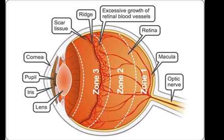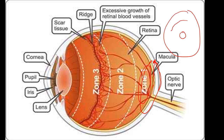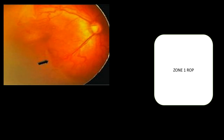Zone 1 is the most posterior zone, drawn with a radius twice the distance from the optic nerve to the macula. Zone 2 surrounds zone 1, and zone 3 surrounds zone 2, making zone 3 the most anterior. The more posterior the disease, the more severe it is — this is a very important point to remember.